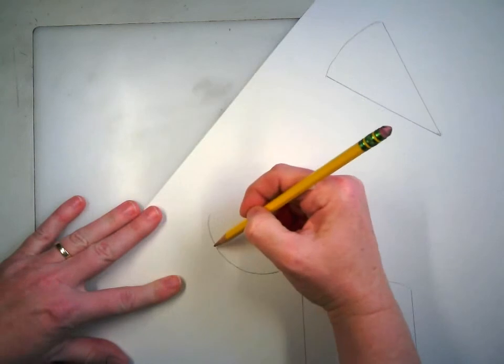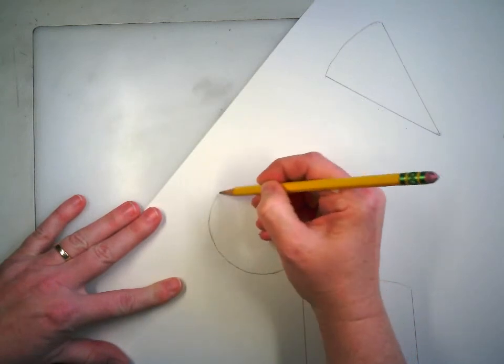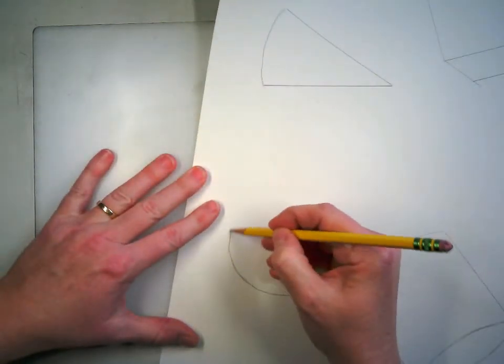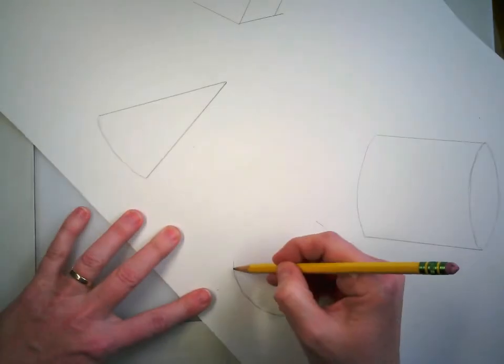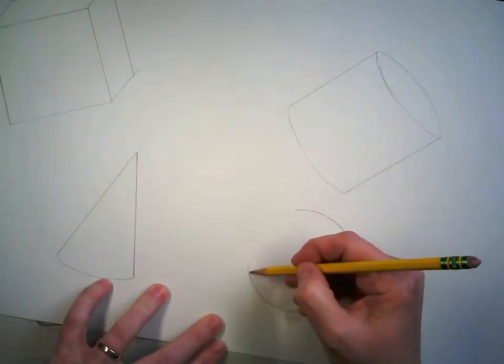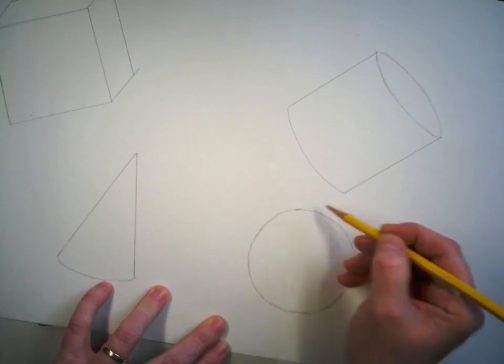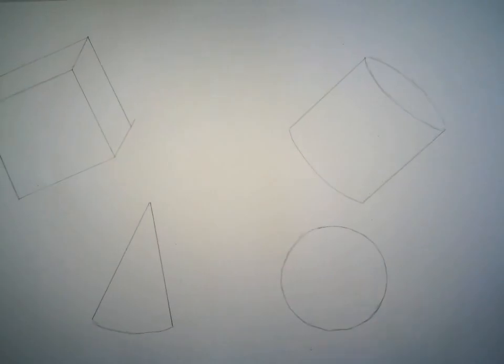Again, we're aiming for 3 to 4 inches across, so that these shapes are the right size for this piece of paper. And there we have the first step of the Op Art Project.